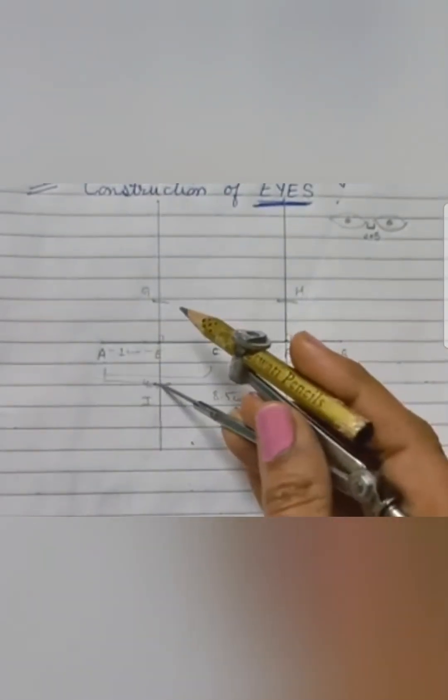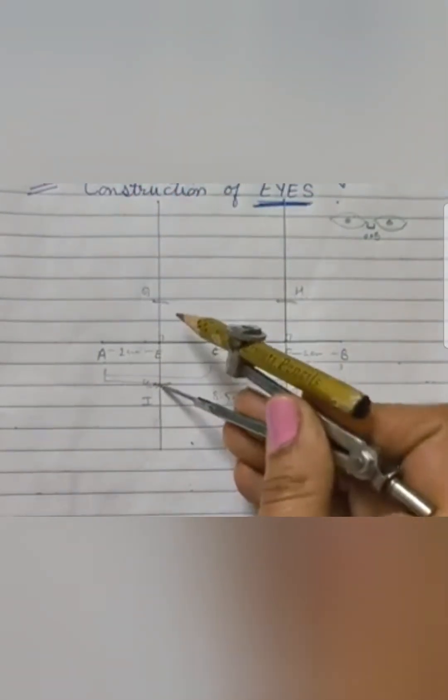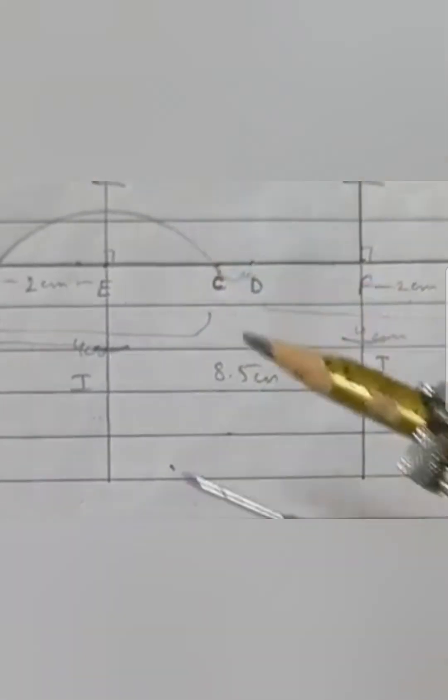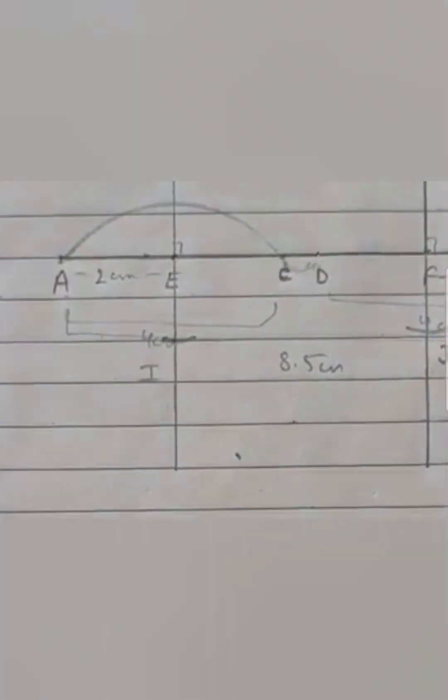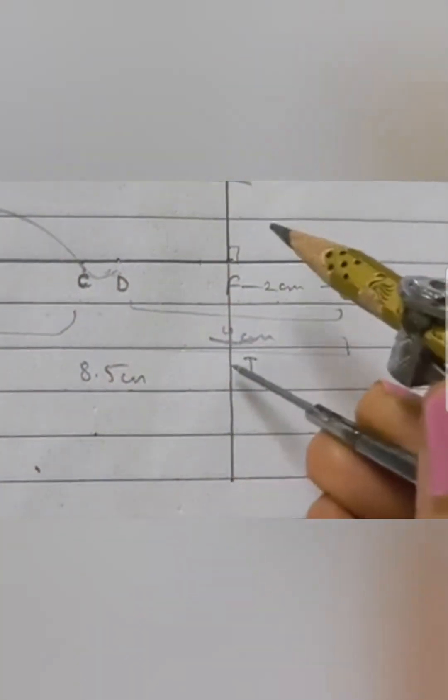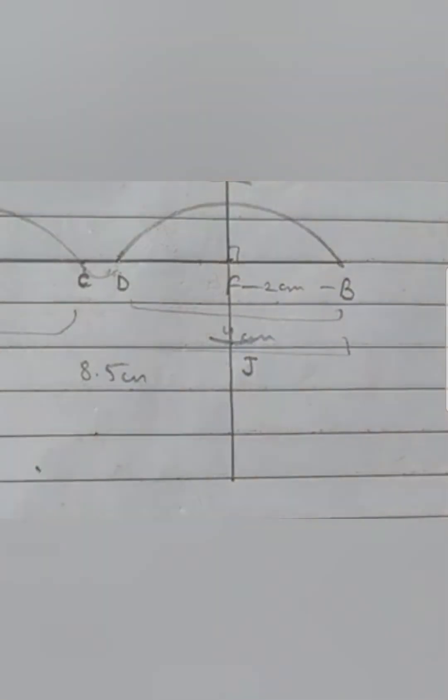With I as center and radius AI, we are going to draw an arc above the line. After drawing this, you would have understood that the measurements taken are correct because the curves which we drew are touching the points A and C. Same way draw with the point G. Sorry, it's J.